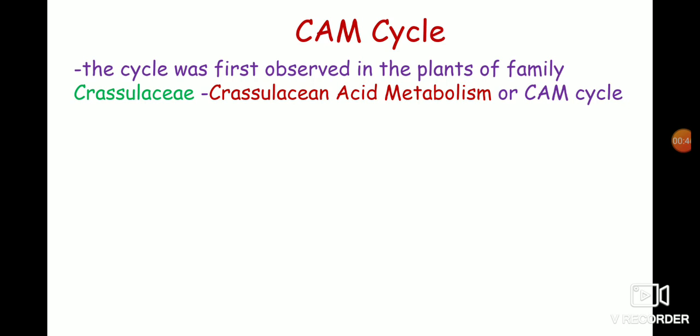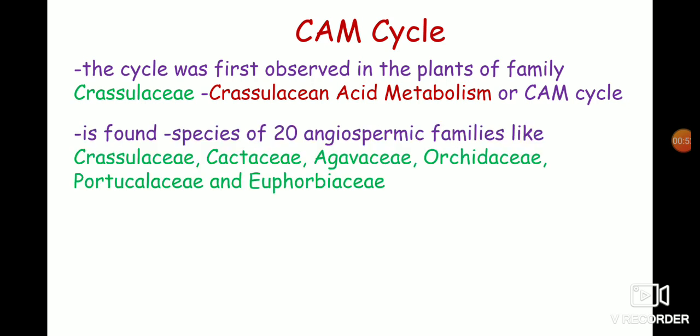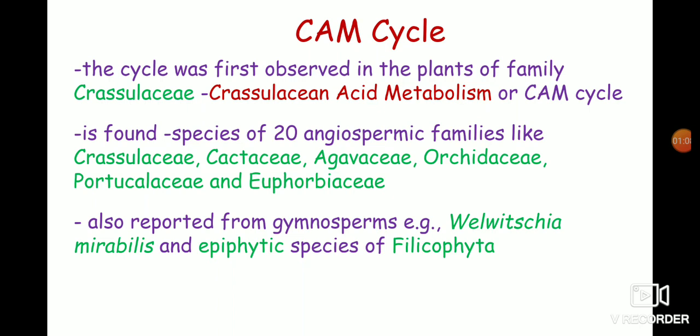The plants which possess this cycle are known as CAM plants. This method of carbon assimilation is found in several plant species of 20 angiospermic families like Crassulaceae, Cactaceae, Agavaceae, Orchidaceae, and Portulacaceae. It is also reported from the gymnosperms, for example Welwitschia and Mirabilis, and also from the epiphytic species of Filicophyta.